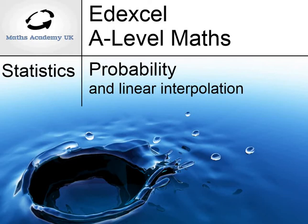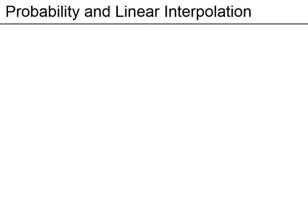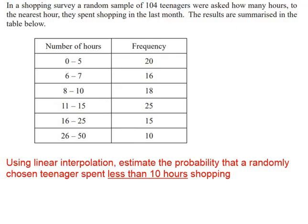Probability and linear interpolation. So we have a grouped frequency table, we have continuous data, and we have to estimate the probability that a randomly chosen teenager spent less than 10 hours shopping.